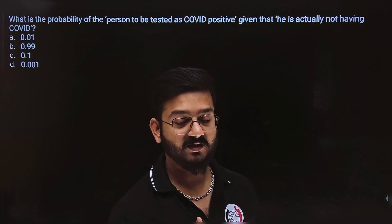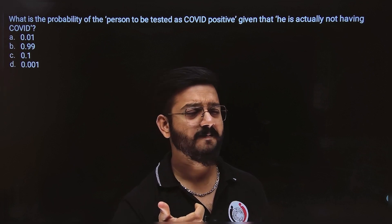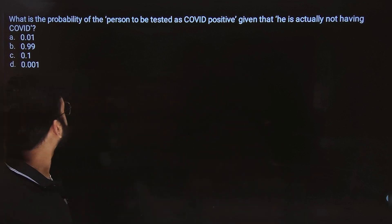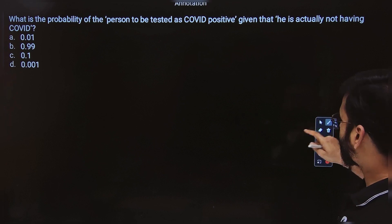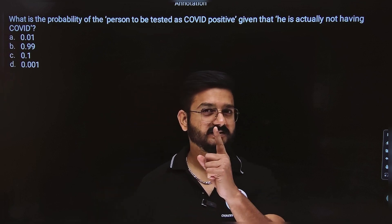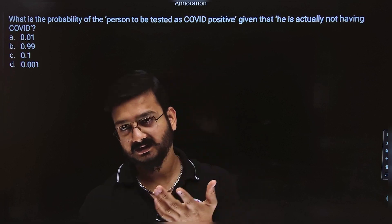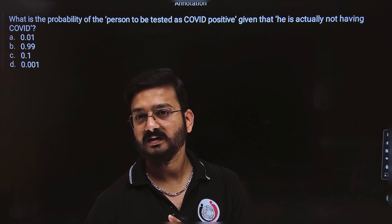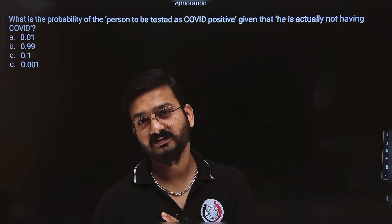Obviously, if I don't have COVID and the test result is positive, what does that mean? That I'm not having COVID. So what is the probability that the test result is wrong? If you read the second paragraph of the question, it is written that 1% of people who don't have COVID still get a positive result. They are free from COVID but the test is positive — that is 1%.